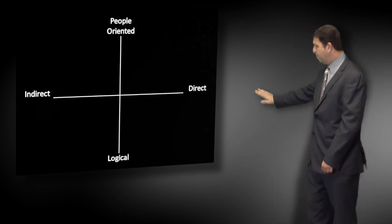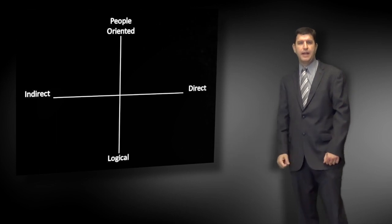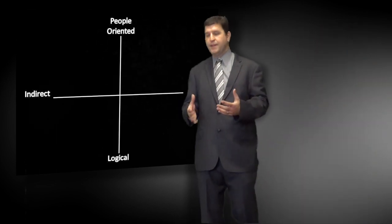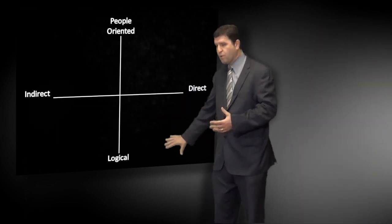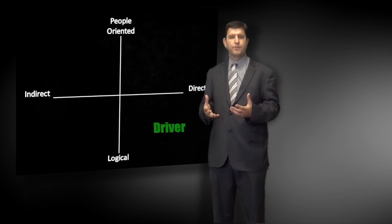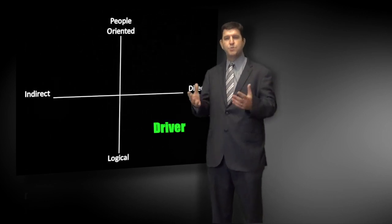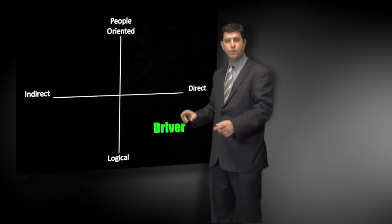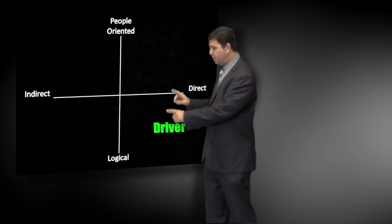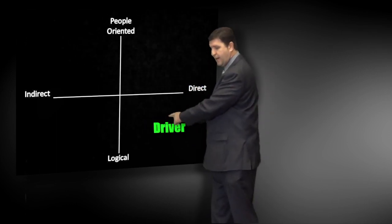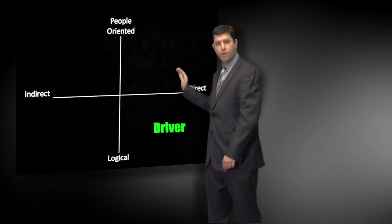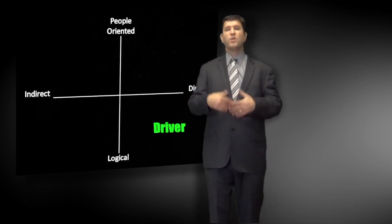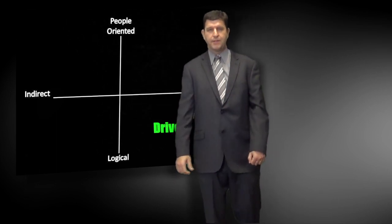So I tend to be a person who's direct and logical. The temperament I fit into, in this lower right quadrant, is what we call a driver type person. Each one of these quadrants — wherever your two points intersect — once you have the two dots, if you draw a line from one to the other, it tells you what your major personality temperament is.